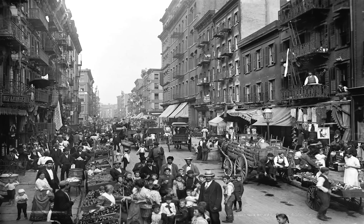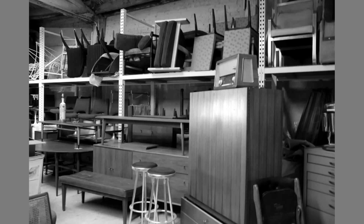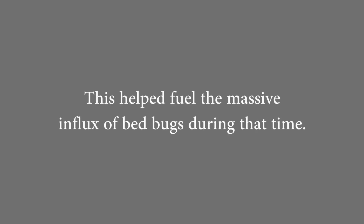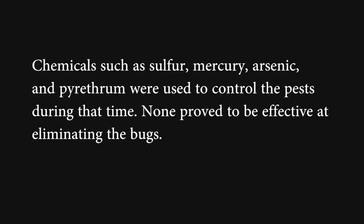Most common areas where there was a high turnover of people, such as overcrowded neighborhoods, hotels, restaurants, furniture shops, and laundries, were prime for infestation and helped fuel the major influx of bedbugs throughout communities during that time. Different chemicals such as sulfur, mercury, arsenic, and pyrethrum were used to control the bedbug epidemic in the 1800s and 1900s.